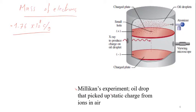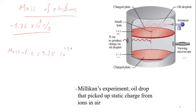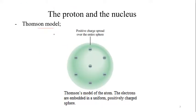Millikan took a further step in calculating the mass of the electrons using a design with two charged plates — positive on top and negative on the bottom. He used an atomizer to spray oil droplets, allowing them to fly to the second plate through a small hole. He viewed them using a microscope, and from his experiment he concluded that the mass of an electron is equal to 9.1 × 10⁻²⁸ grams.